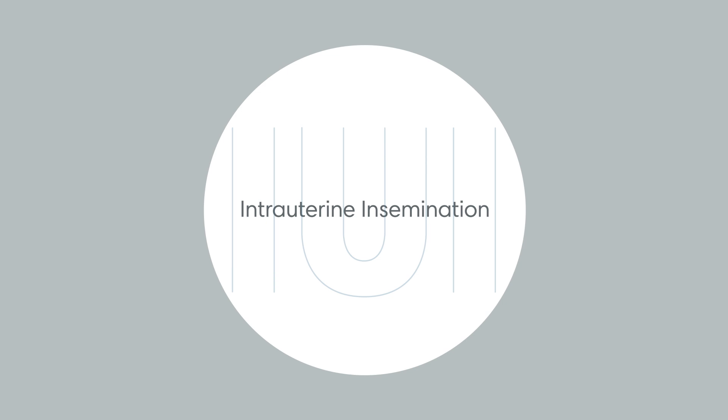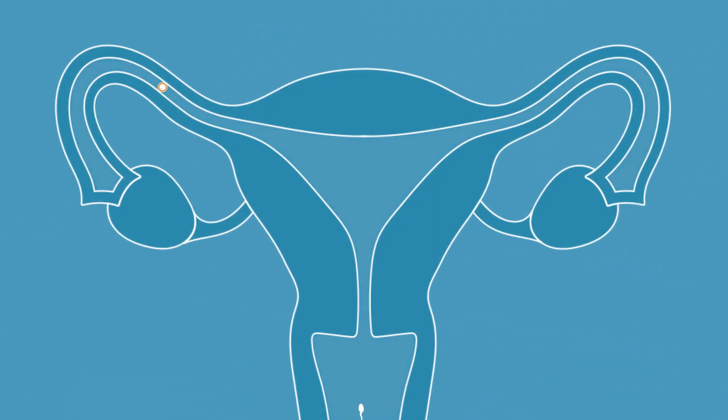Commonly known as artificial insemination, intrauterine insemination, or IUI, is an outpatient procedure in which sperm from a woman's partner or a donor is placed into her uterus.